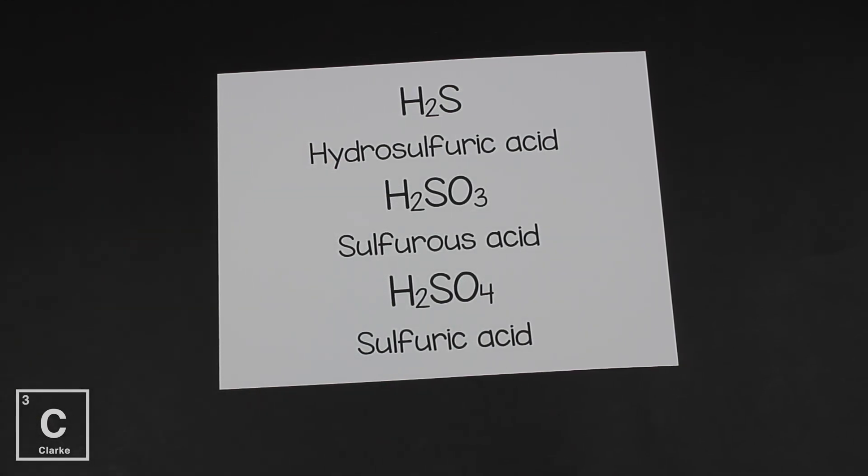Here, H2SO3, where SO3 is sulfite. So we've got sulfurous acid. Because remember, ite changes to ous. Sulfurous acid. Then this last example, SO4, we've got sulfate. When the ending is ate, we change it to ic. So we get sulfuric acid.